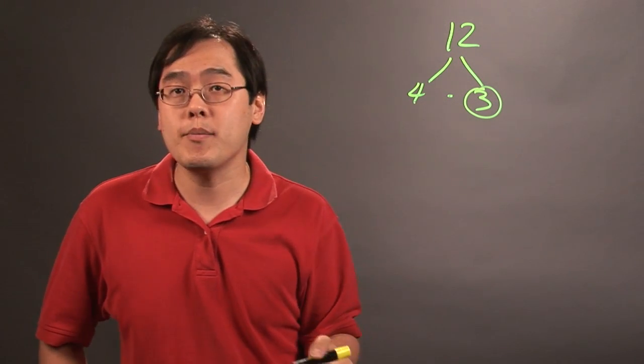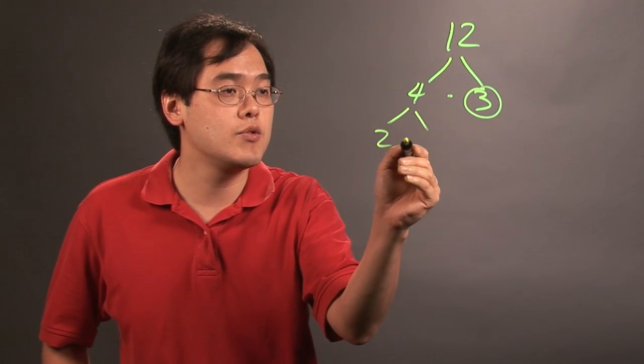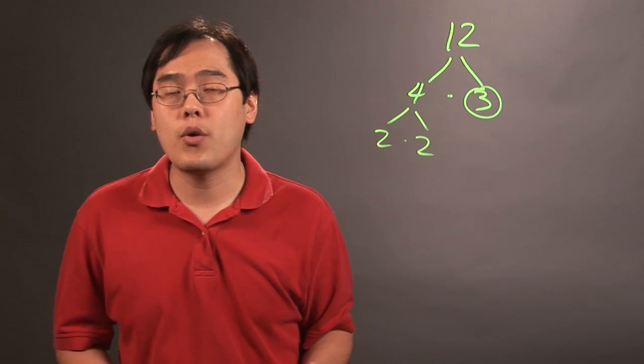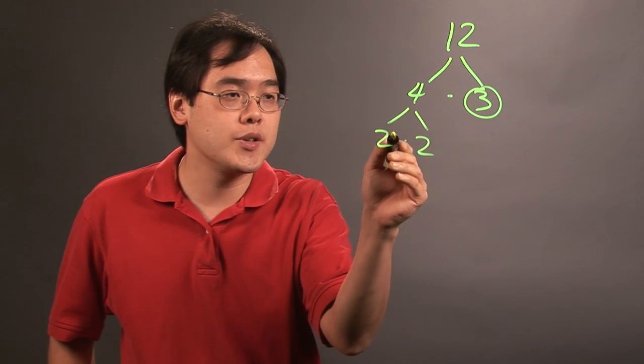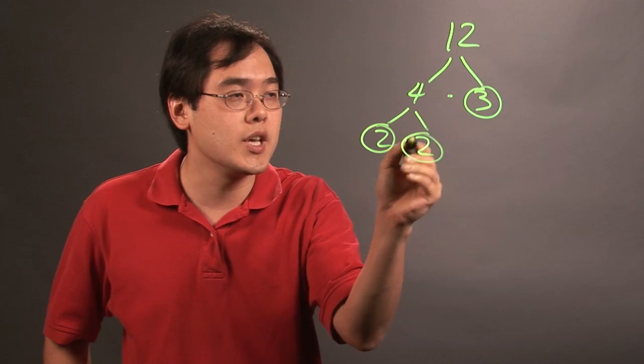Now the 4 can be broken down further. So 4 can be broken up into 2 times 2. As you already know, 2s cannot be broken down any further because they're primes. So we're going to circle those individually.